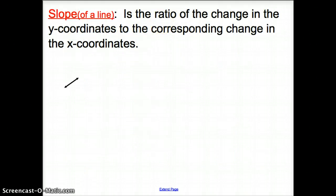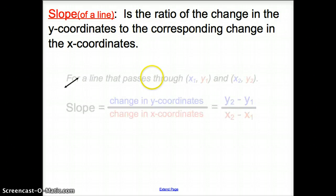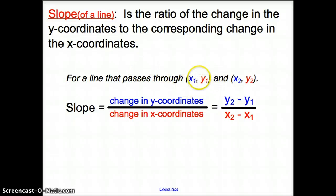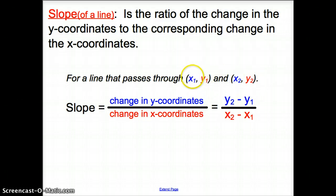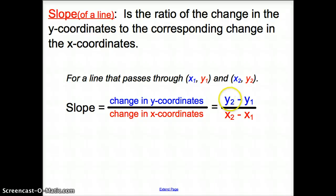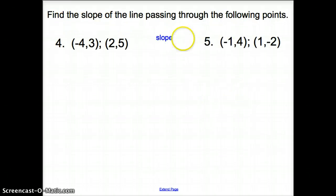Rate of change leads us into slope. Slope of a line is the ratio of the change in y-coordinates to the corresponding change in x-coordinates. If the line passes through coordinate points x₁, y₁ and x₂, y₂ — those subscripts are just notation, it could just be x, y and a, b. Slope is the change in y over the change in x, or y₂ minus y₁ all over x₂ minus x₁.